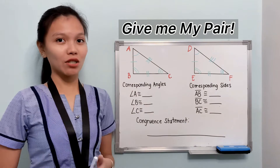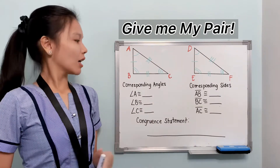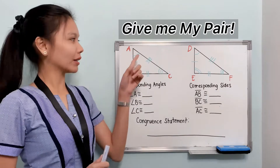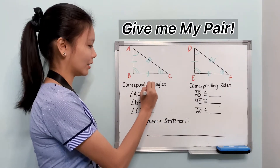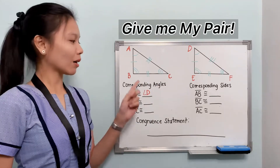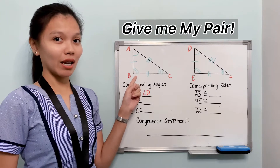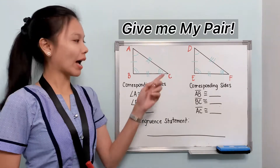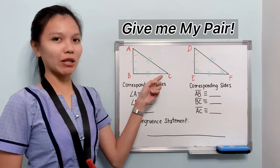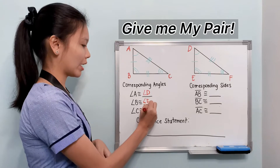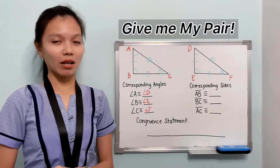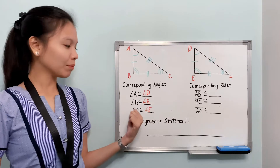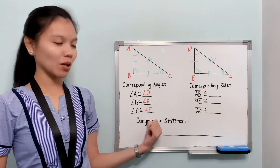Given here are two triangles, and we're going to find their correspondence. For the corresponding angles, we have angle A. Based on their markings, the correspondence of angle A is angle D. For the second one, we have angle B — the correspondence of angle B, based on the markings, is angle E. Then for angle C, the correspondence is angle F. Take note that correspondences are also congruent — that's why we use the congruent symbol. So we have angle A is congruent to angle D, angle B is congruent to angle E, and angle C is congruent to angle F.